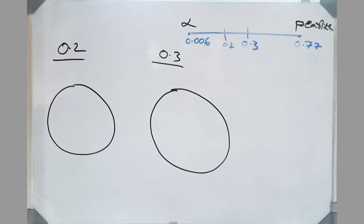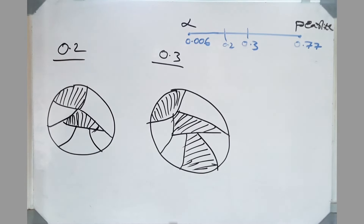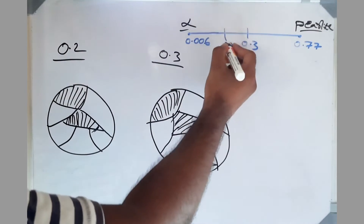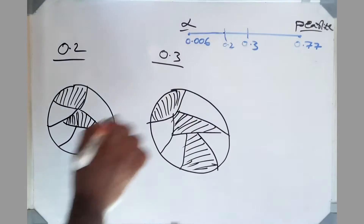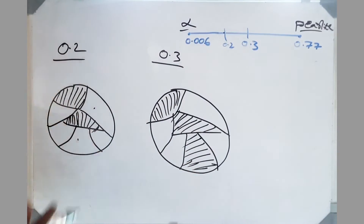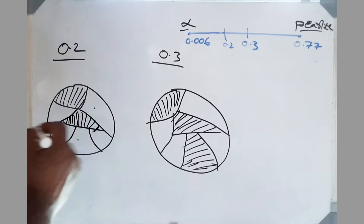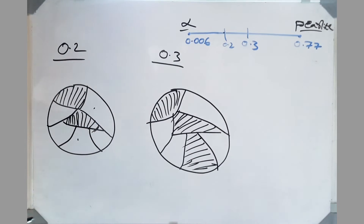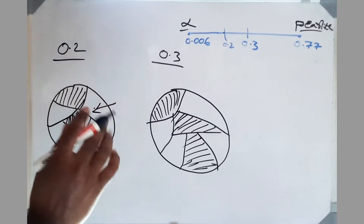The next question is: draw the microstructure of 0.2% and 0.3% weight percent carbon steel at room temperature. At room temperature we have alpha (ferrite) and pearlite. From the lever rule, 0.2% carbon steel has more alpha and 0.3% has comparatively less alpha. So the main difference between these two microstructures is that the amount of pearlite increases as carbon content increases.